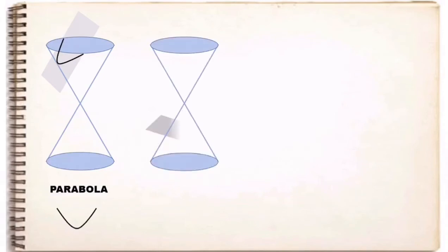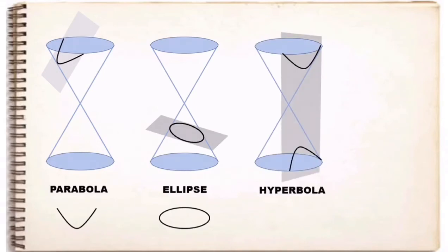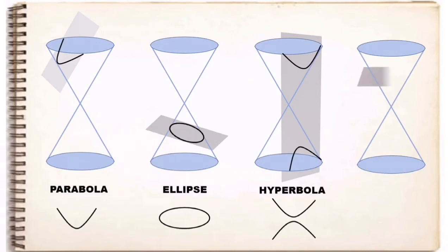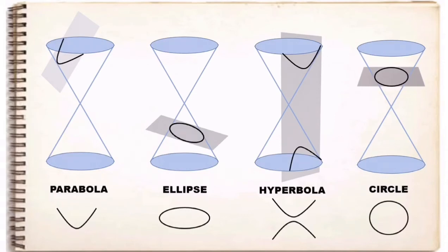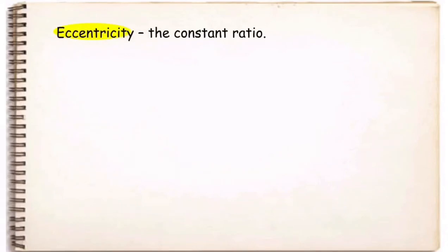So those are the non-degenerate conics: a parabola if the cutting plane is parallel to one and only one generator; an ellipse if the cutting plane is not parallel to any generator; a hyperbola if the cutting plane intersects a double-napped cone and is parallel to two generators; and a circle if the cutting plane is not parallel to any generator but perpendicular to the axis of the cone. They are termed conic sections because each is the intersection of a two-napped cone and a plane, depending on the manner in which the plane cuts the cone.